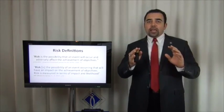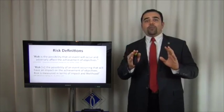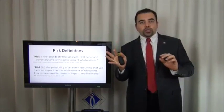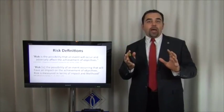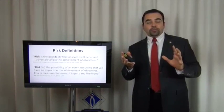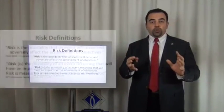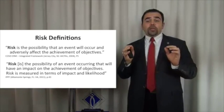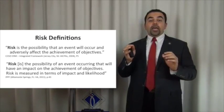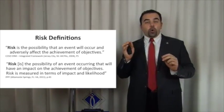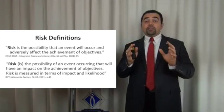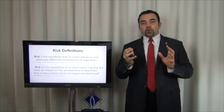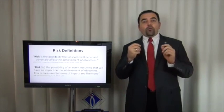If something positive happens — for example, rather than a 10% increase in sales, you get a 20% increase — that is not a risk, that is an opportunity. If something negative happens, we call it risk. The IIA defines risk as the possibility of an event occurring that will have an impact on the achievement of the objective. Risk is measured based on impact and likelihood.